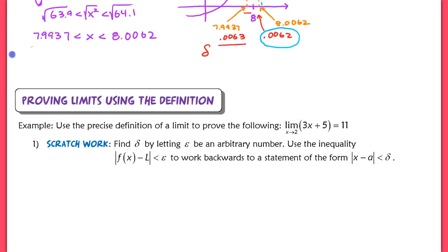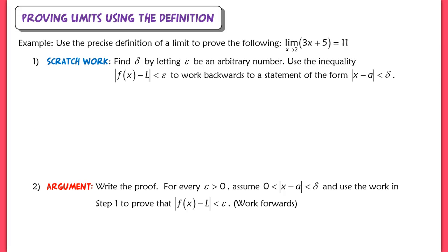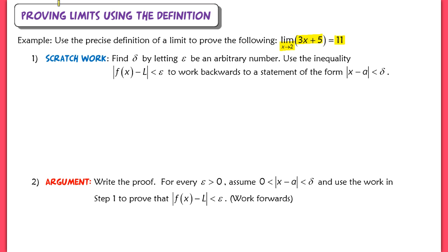Today we're actually going to use the definition to prove that a limit exists. In this example, we're asked to use the precise definition of a limit to prove that the limit of 3x plus 5 as x approaches 2 is equal to 11. We'll follow two steps. The first step is similar to our previous strategy where we worked backwards, using the inequality to find a delta in terms of epsilon.